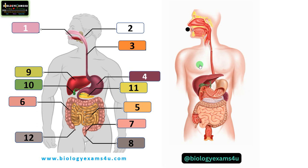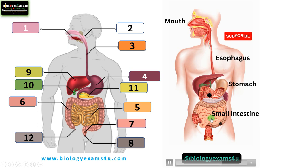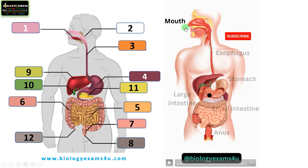First, let us understand how food travels through the body during digestion. It starts with the mouth, then the food moves to the esophagus, then it moves to the stomach where it is further digested, then the digested matter moves to the small intestine where absorption of nutrients takes place, then it enters the large intestine and the waste is removed through the anus. As you see, this is a long tube starting from mouth to anus and this is called the alimentary canal.